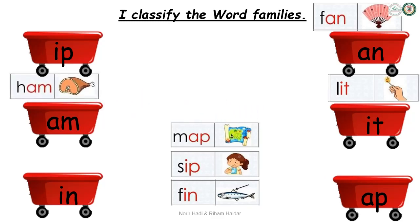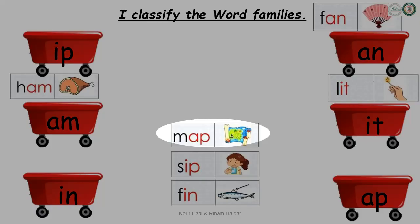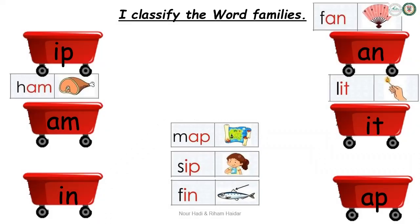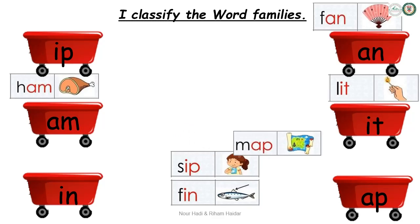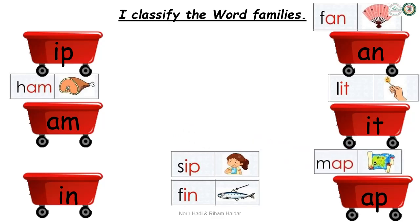What about this word? Map. M-a-p. Map. Map. What word family is map? Nice! It is the -ap word family.